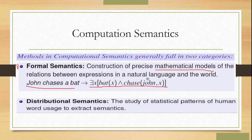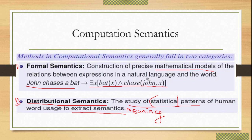But the very popular one is called distributional semantics. In our coming lectures we will more focus on distributional semantics. Distributional semantics is the study of statistical patterns of human word usage to extract semantics. So we are using some statistical pattern or statistical formula to find out and extract the meaning of the word.